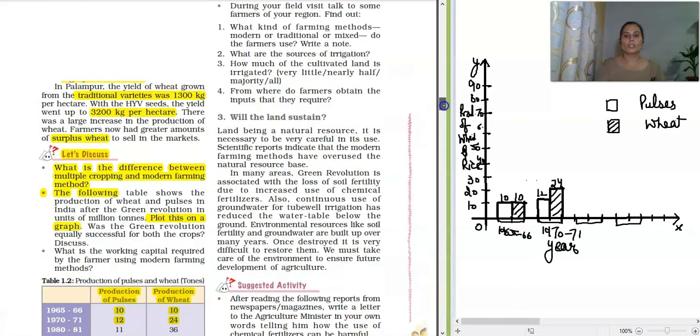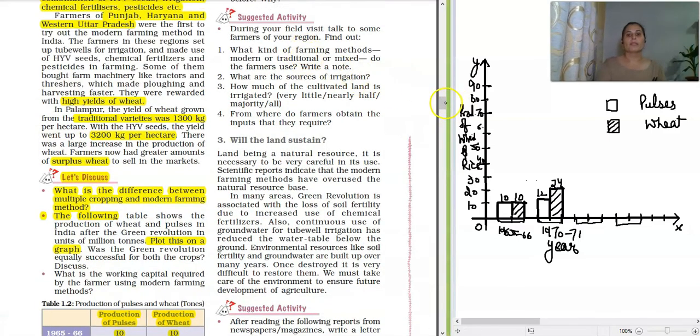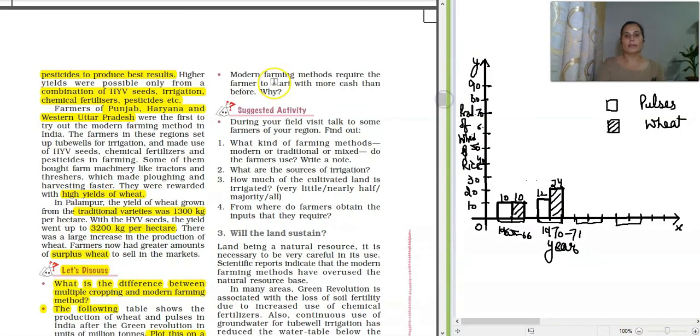We will cover its questions in this video itself. Look here ahead. Modern farming methods require the farmers to start with more cash than before. Do you agree with this? Why?